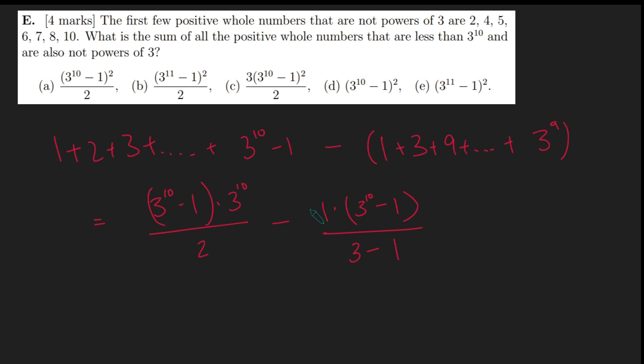And this is quite nice because 3 minus 1 is 2. So the denominators already match up. So this is 3 to the 10 minus 1 times 3 to the 10 minus 3 to the 10 minus 1 over 2. And so now if we just maybe expand this guy and bring it all under one denominator,